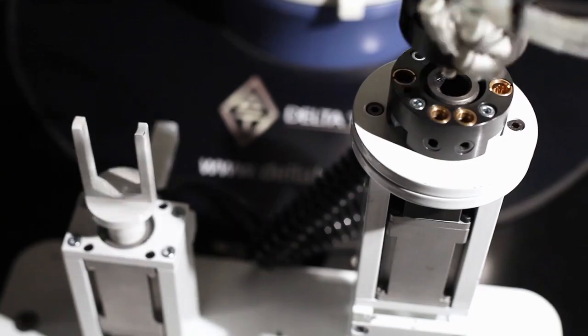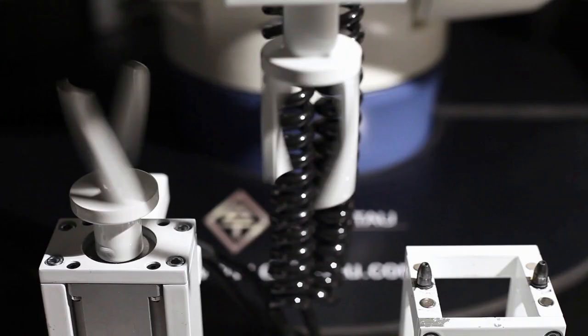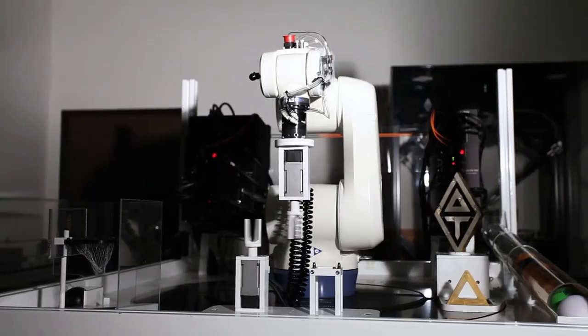For the dancing fork station, we actually have two following modes programmed in our kinematics. One is the following mode for the ring table. The other one is for the fork.